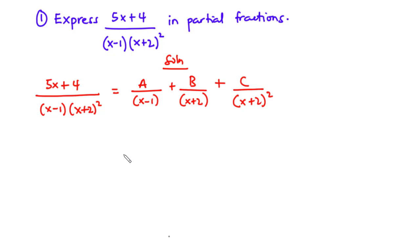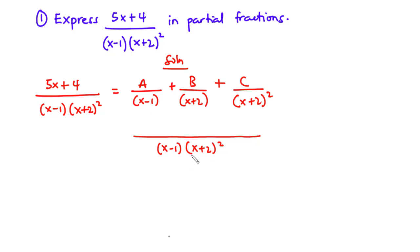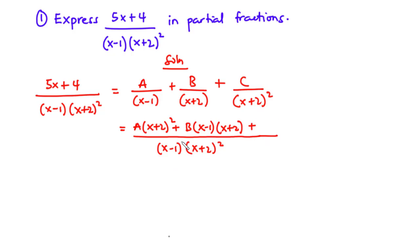The first thing we are going to do is find the LCM, which becomes x minus 1 times x plus 2 all squared. Notice that x plus 2 is a factor of x plus 2 all squared. Dividing by x minus 1 leaves x plus 2 all squared, giving A times x plus 2 all squared. Dividing by x plus 2 leaves x minus 1 times x plus 2, giving B times x minus 1 times x plus 2. Dividing by x plus 2 all squared leaves x minus 1, giving C times x minus 1.